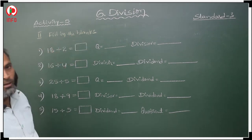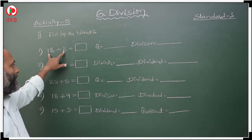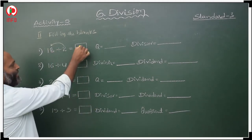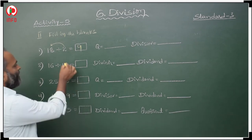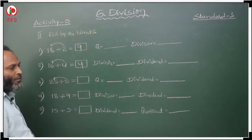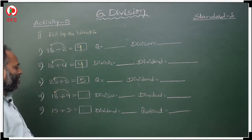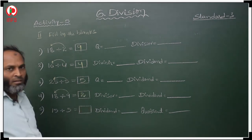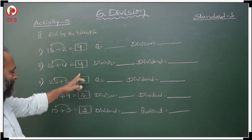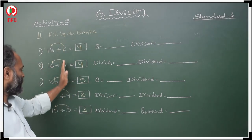In this second bit, we have to fill in the blanks. First, 18 divided by 2 — what is the answer? We check the 2 times table: 2 nines are 18, so we write 9. In the 4 table, 4 fours are 16, so we write 4. In the 5 table, 5 fives are 25, so we write 5. In the 9 table, when you get 18, we write 9. These are all answers to the questions. These are divisors.